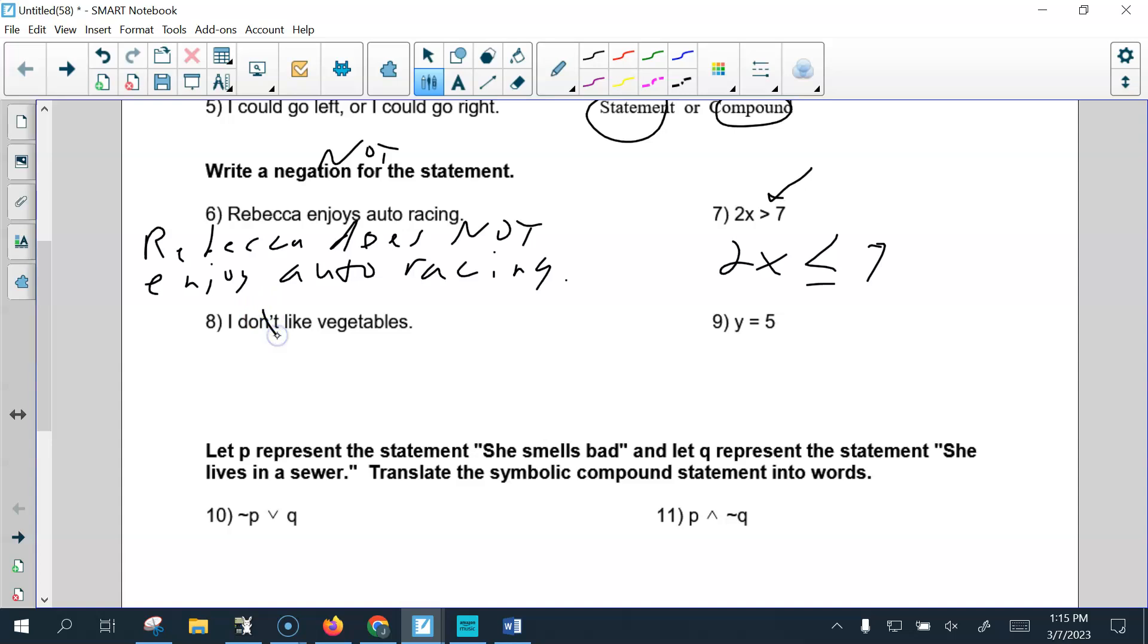I don't like vegetables. I do like vegetables. That would be like saying I don't not like vegetables, so I like them. Y equals 5. No, it doesn't. Y does not equal 5.